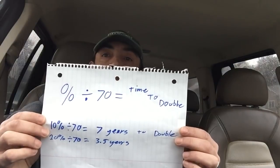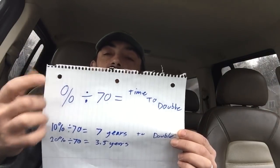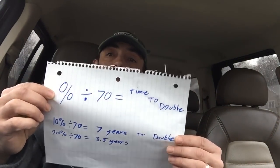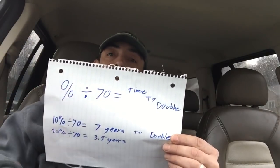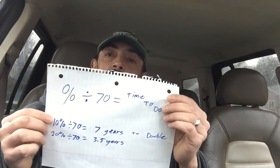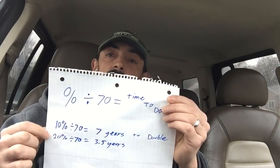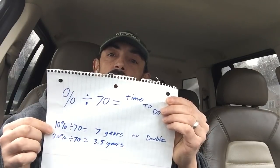There's the formula right there. Take your percentage — I got terrible handwriting, guys, please don't make fun of me, I'm embarrassed about it — but I just thought I'd bring it up so you could actually see it. So, you take your percentage, divide it by 70, and this will give you your time to double. For example: 10% divided by 70 = 7 years, and 20% divided by 70 = 3.5 years.